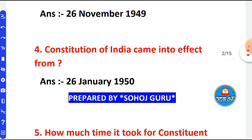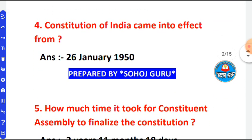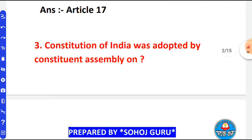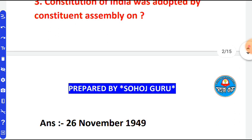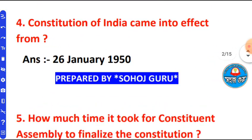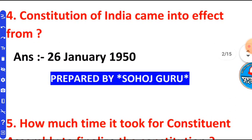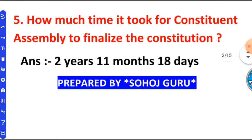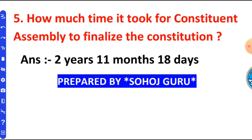The Constitution of India came into effect from 26 January 1950. How much time did it take for the Constituent Assembly to finalize the Constitution? The Constitution of India was adopted by the Constituent Assembly on that date.